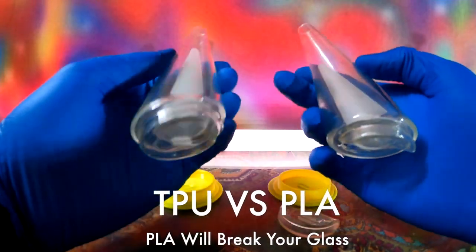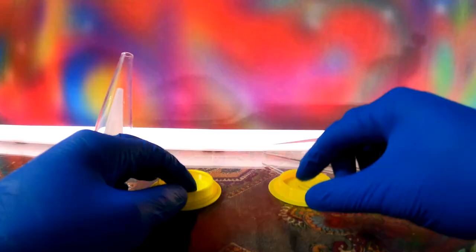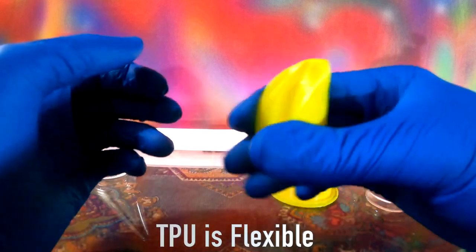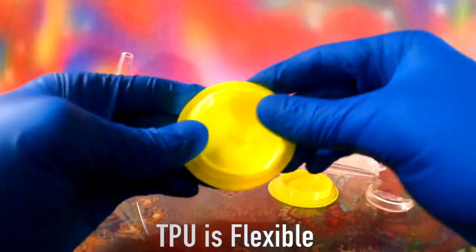TPU vs PLA glass stands. The first thing you'll notice about TPU is that it is a flexible material, unlike PLA. PLA will be rigid and break your glass over time.